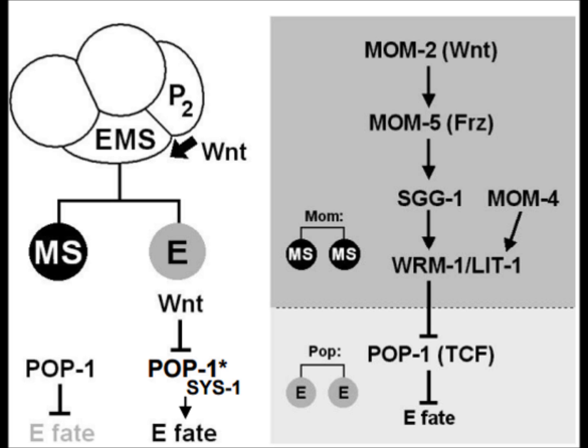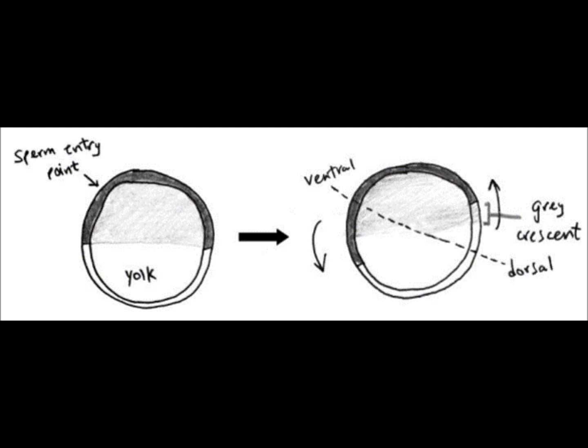Lower levels of unphosphorylated POP-1 in the nucleus reduces its ability to repress E-like development, and POP-1/SYS-1 also contributes to the activation of E-fate determining factors END1 and END3. Now we will look at Wnt signaling in Xenopus embryos.